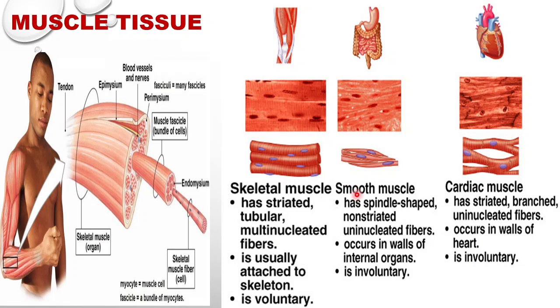These are the three types of muscle tissue: skeletal muscle, which is attached to the bones; smooth muscles, which are found in internal organs; and cardiac muscles, which are found exclusively in the heart.